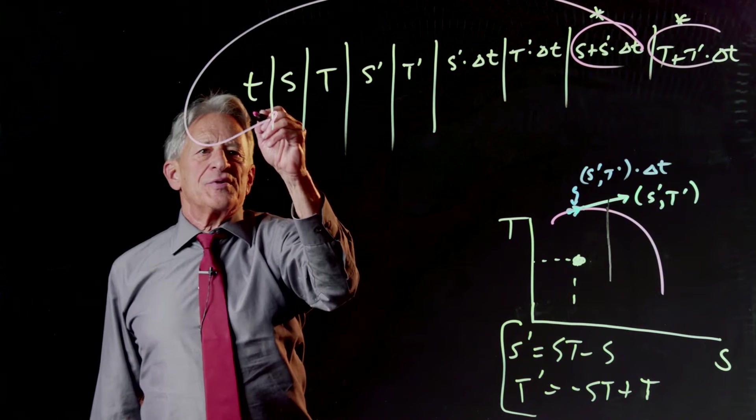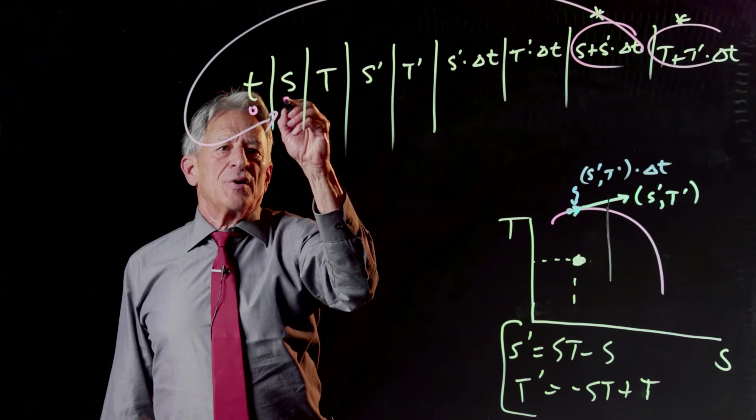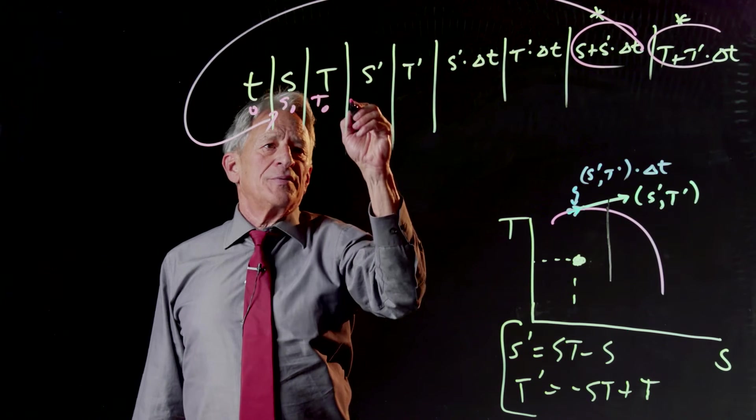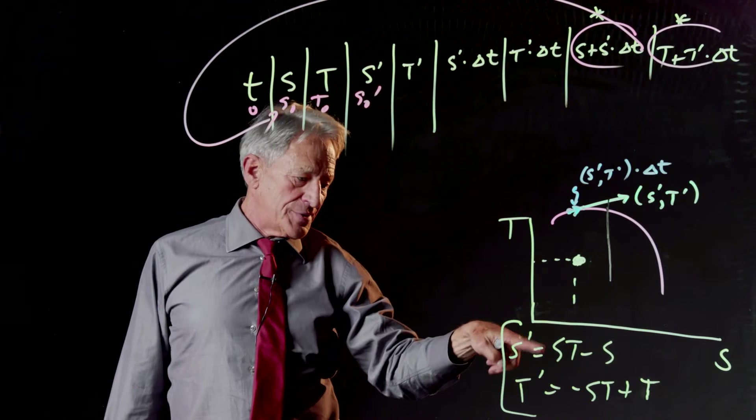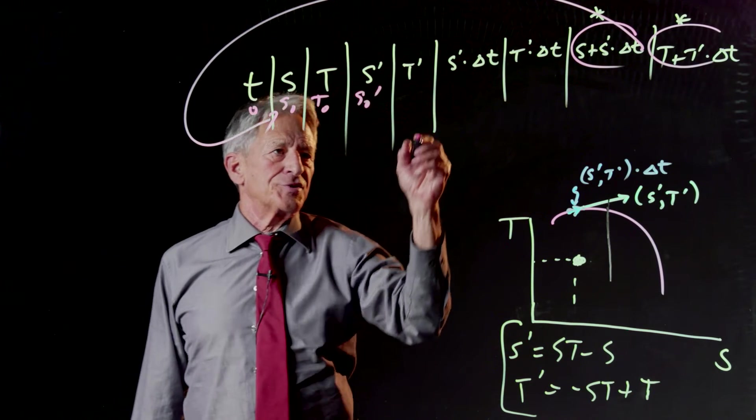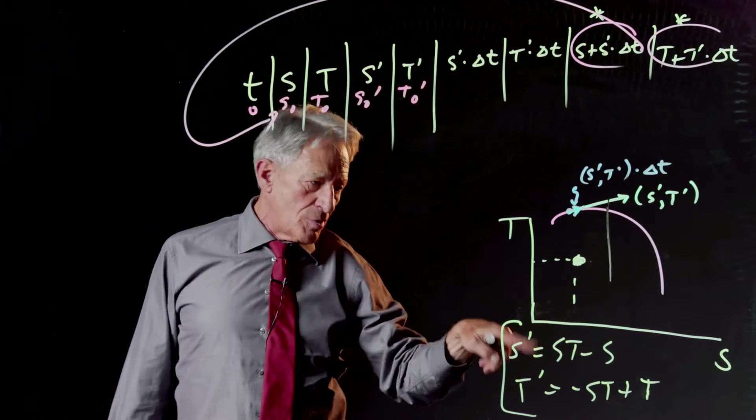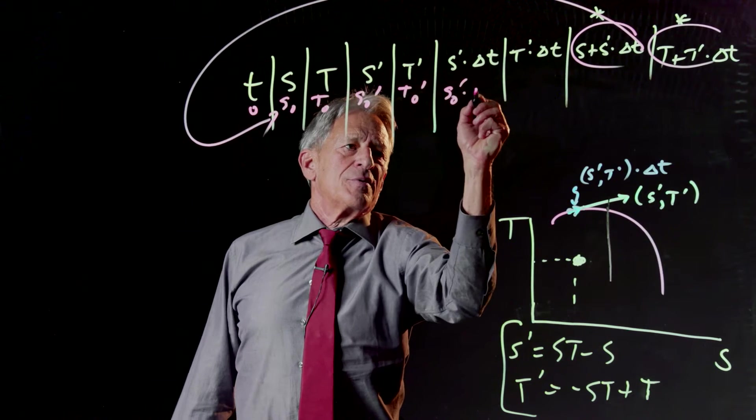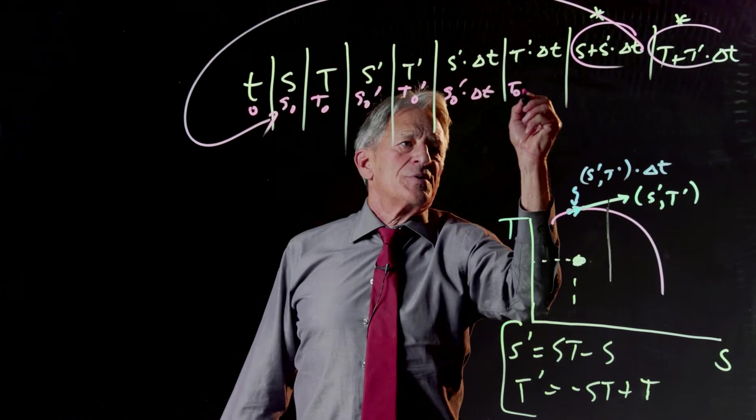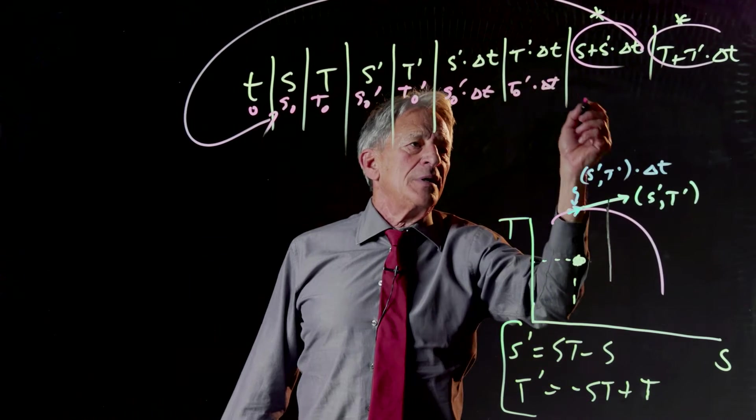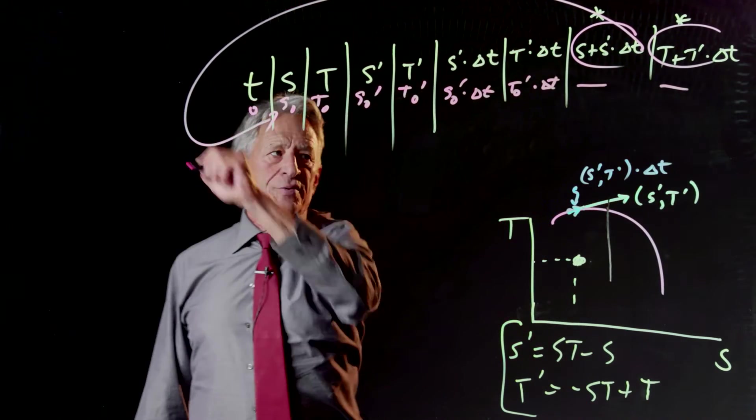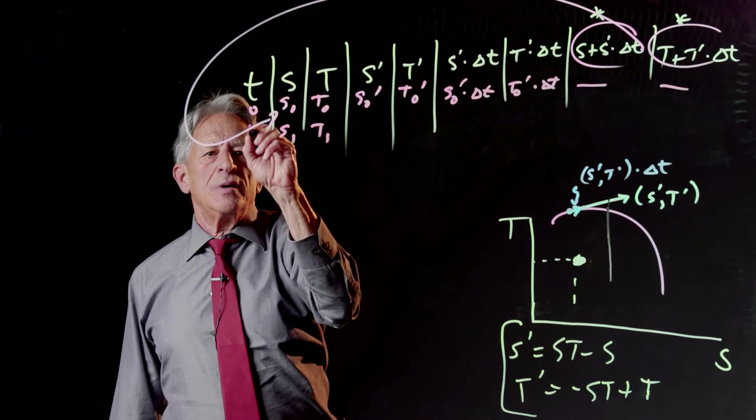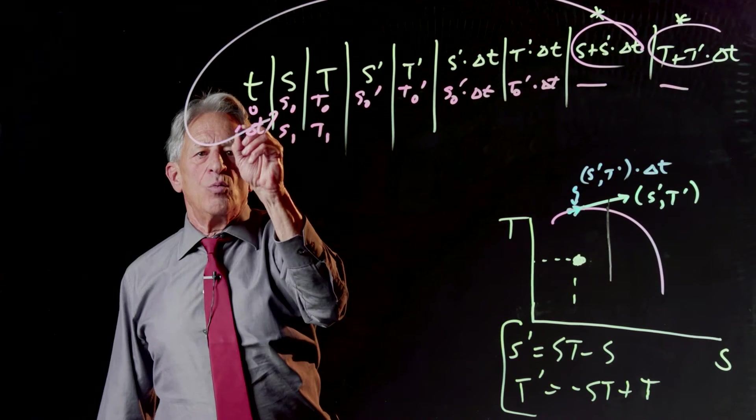So if this is time 0, this is going to be s 0, this is going to be t 0, this is going to be s 0 prime as calculated from the differential equation, this is going to be t 0 prime as calculated from the differential equation. And then s 0 prime times delta t, t 0 prime times delta t, then we add them and we carry the two last columns forward and they become s 1 and t 1 and the time is now 1 delta t.